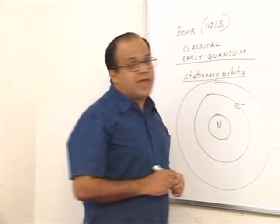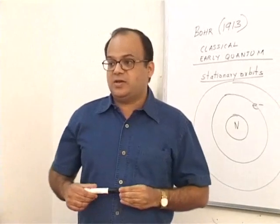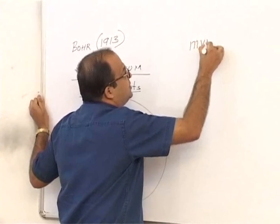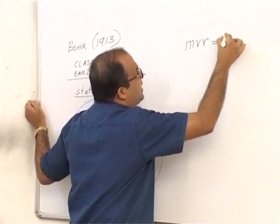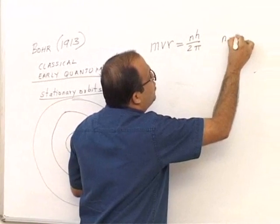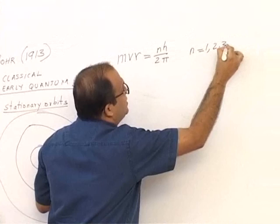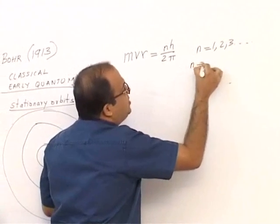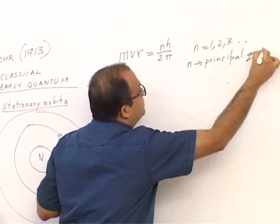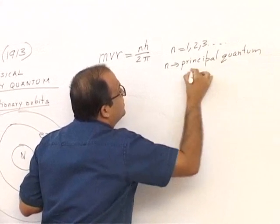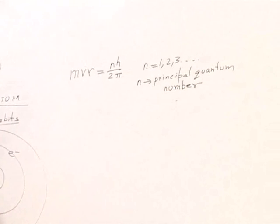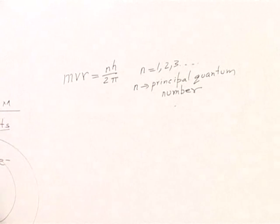Bohr found that the angular momentum of the electron is quantized. Angular momentum is given by mvr = nh/2π, where n can be 1, 2, 3 and so on. Here n is called the principal quantum number. So the first equation is mvr = nh/2π.